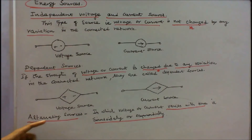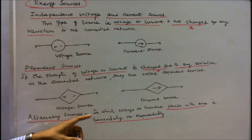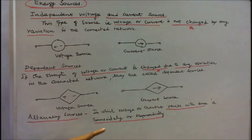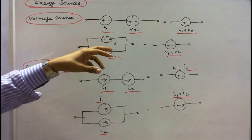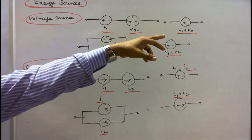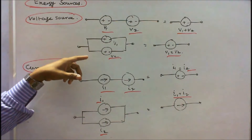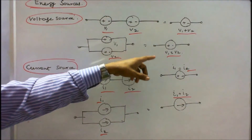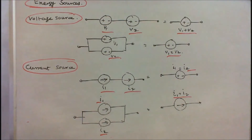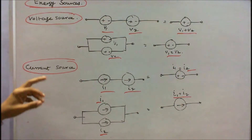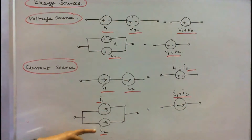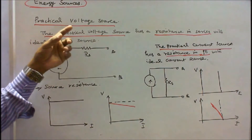Another type is alternating sources, in which voltage or current varies with time, either sinusoidally or exponentially. When two voltage sources are connected in series, the resultant is V1 plus V2. When two voltage sources are connected in parallel, the resultant requires V1 equal to V2. When two current sources are connected in series, I1 must equal I2. When two current sources are connected in parallel, the resultant current is I1 plus I2.